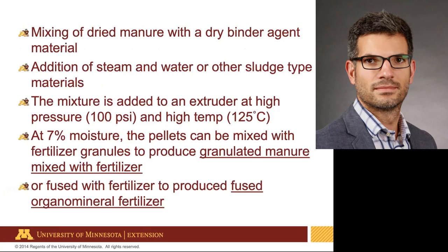Some industrial processes have been developed where you take the manure, dry it to a certain moisture content, and then add a binder agent which allows you to mix the chemical fertilizer and the manure. If you're going to pelletize it, the binder agent also helps produce nice pellets. After this dry manure and binder agent are mixed, they go into a bath where you add steam and water — and also potentially sludge or other liquid materials, such as UAN, depending on what you're doing with the material.